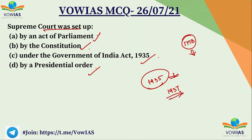Later, when the Constitution was formed, it was known as the Federal Court under the 1935 Act. After the Constitution was established, the Supreme Court of India was established. It derived its form from the 1935 Act, but the Supreme Court was established based on the Article of the Constitution — it's a constitutional body. Article 124 defines the Supreme Court.